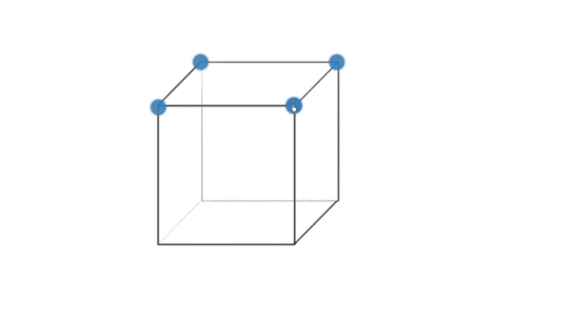So we've got a cube there. And I'm going to position an anion in each of the corners. And then what we're going to do is we're going to position a cation in the center of the cube.